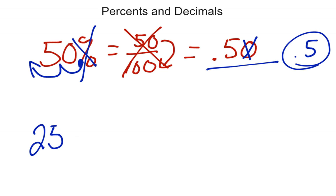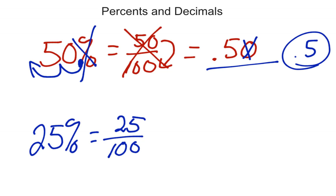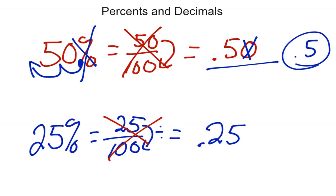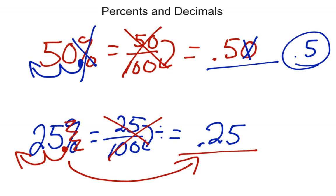Same thing with 25%. The old way was: percent means that number out of 100, so 25 out of 100. Then 25 divided by 100 gives us 0.25. But when we're changing percents to decimals today, we eliminate that middle step. I go right from 25% — the decimal is all the way to the right — and to get rid of the percent sign, I move the decimal two places to the left, making it 0.25, then drop the percent sign.